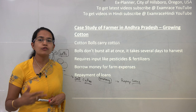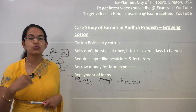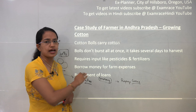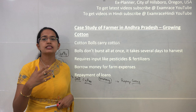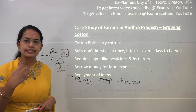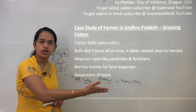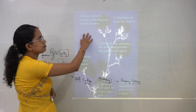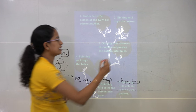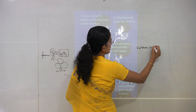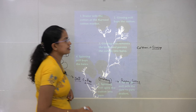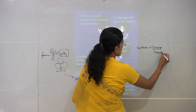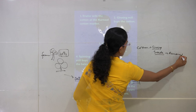Now let's see how the actual price of the shirt in the market ends up very high while the farmer gets very little. The farmer uses fertilizers and pesticides, takes loans for farm equipment, and repays a large portion of his earnings. The cotton is then sold by a trader and goes to the ginning mill. The ginning mill buys the cotton, presses it, and removes all the seeds.